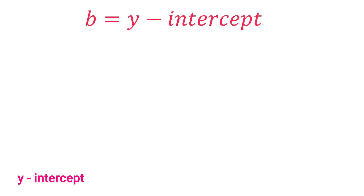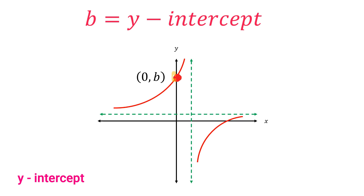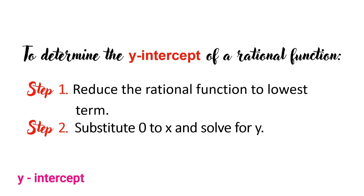Now let us move to the other intercept: the y-intercept. It is denoted by B and is the point lying on the y-axis. Suppose the ordered pair of that point is (0, B); B is the y-intercept and its x-coordinate is 0 since the point lies on the y-axis. For example, if the point is (0, 3), then 3 is the y-intercept. To find the y-intercept: step 1, reduce to lowest term; step 2, substitute 0 for x and solve.